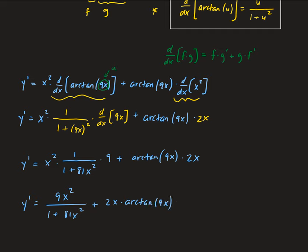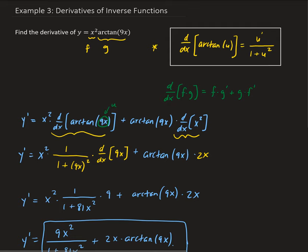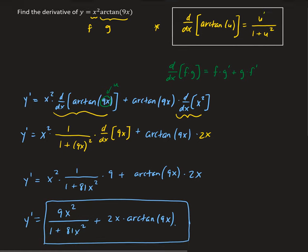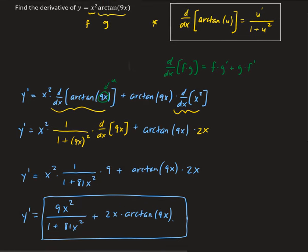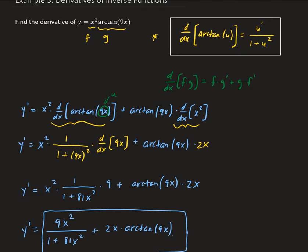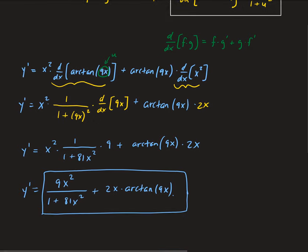So this is our solution — that is the derivative of our original function. We applied the product rule, and within that we applied the derivative of arctan of u with respect to x. That's the result that we get.